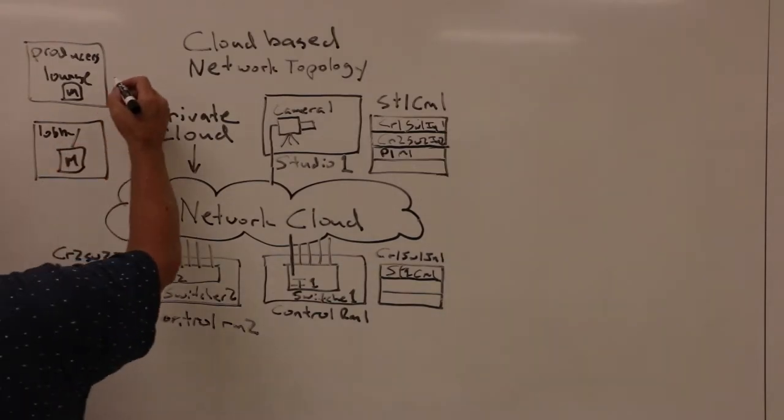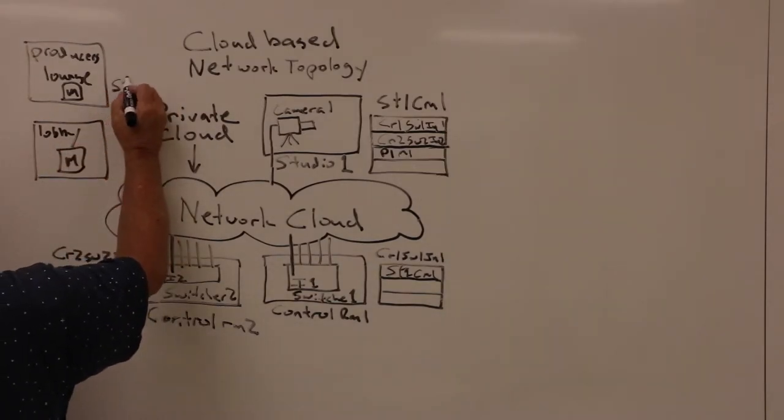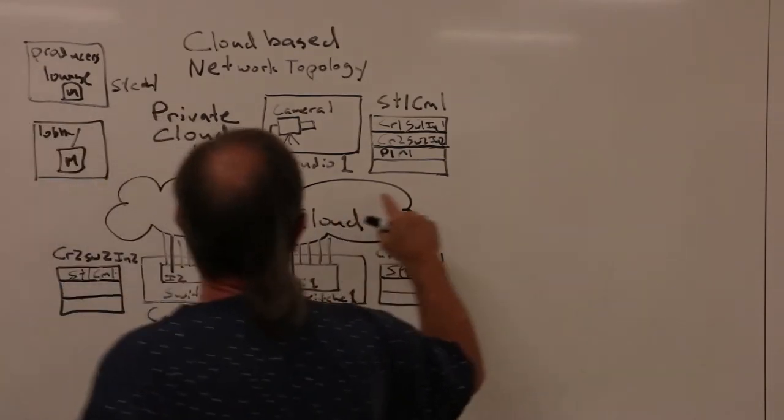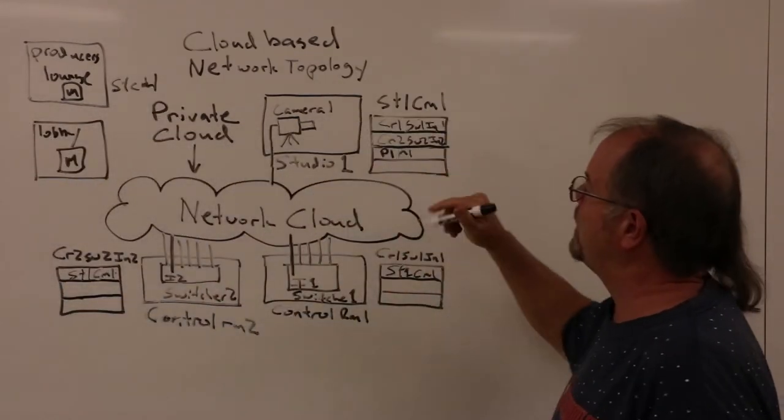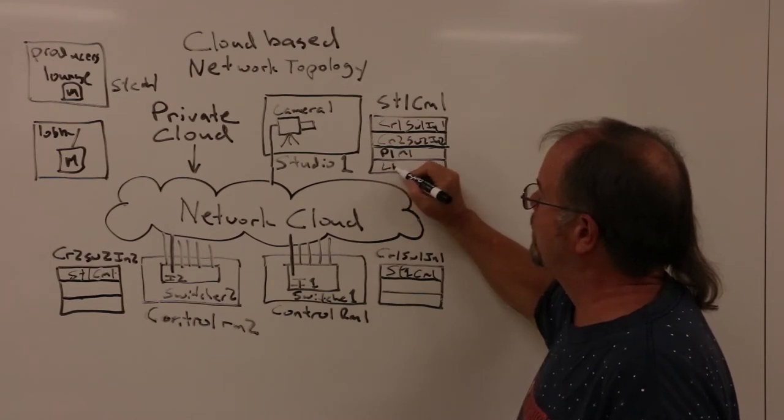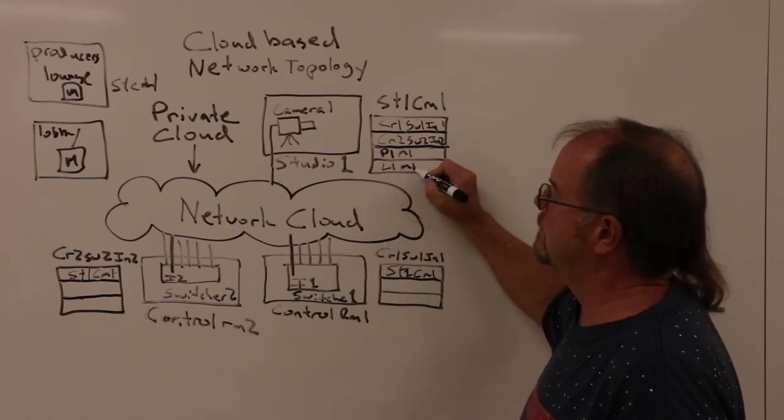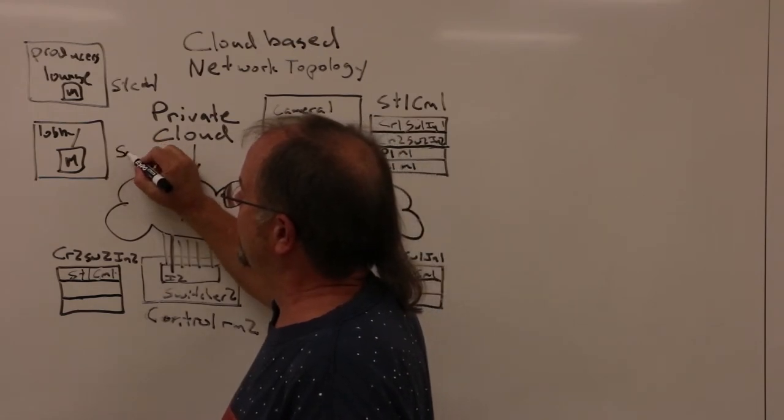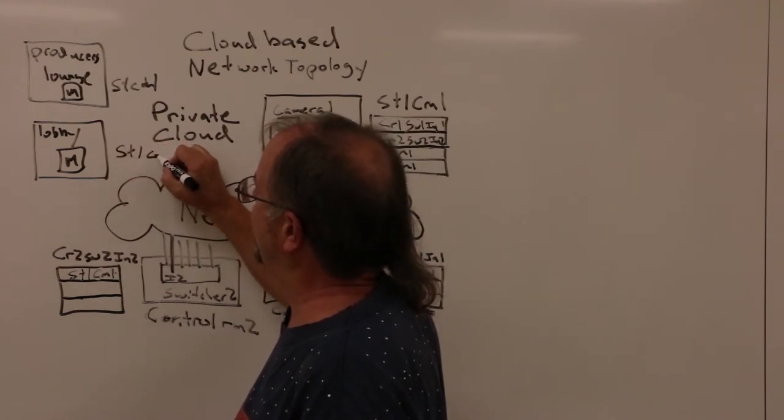There would be a similar table that says my input comes from studio 1, camera 1. And likewise, we would make a routing table entry for the lobby saying send it to lobby 1, monitor 1. And then in the lobby, the monitor would say receive your input from studio 1, camera 1.